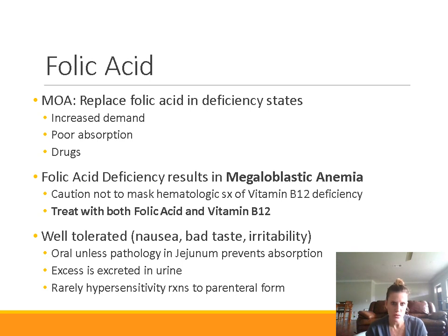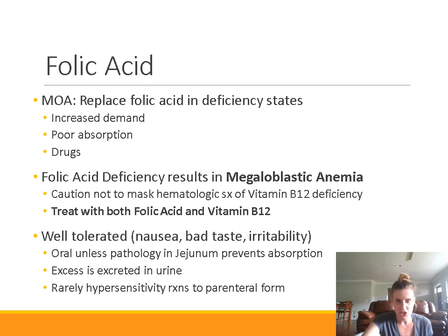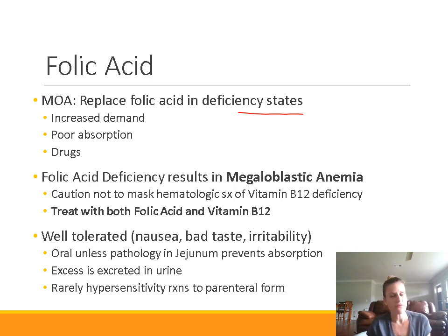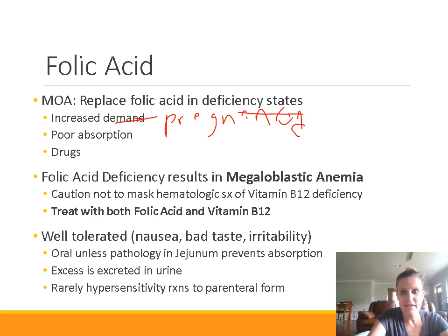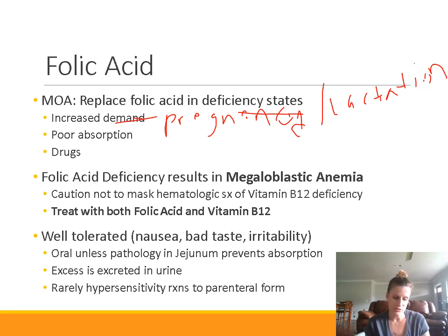Folic acid is given when we have a deficiency in folate in the body. The natural form in our body is called folate — this is vitamin B9. Folic acid is the drug formulation that we give, and it can correct anemia because we need folic acid to produce red blood cells. Folic acid deficiency can occur because of increased demand, which happens in pregnancy and also lactation. Folic acid is very important during pregnancy to prevent neural tube defects like spina bifida, and we always supplement folic acid in pregnancy.